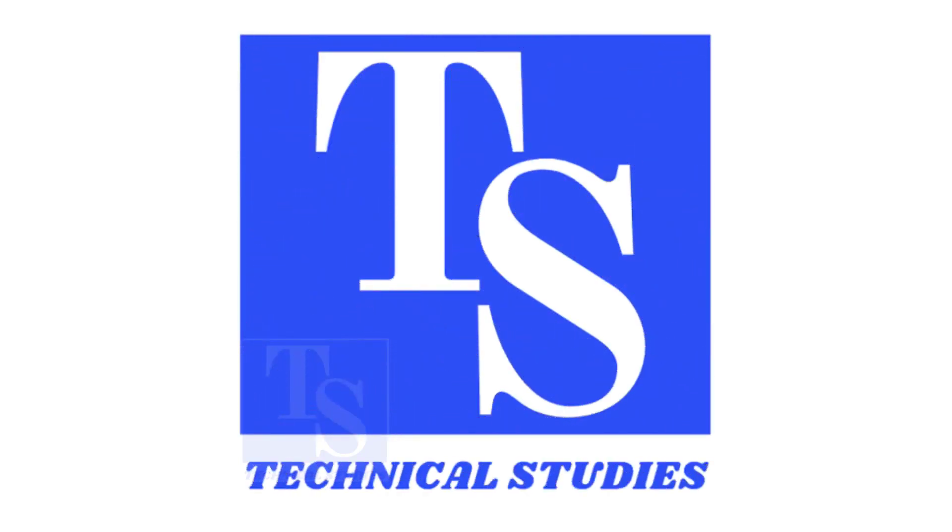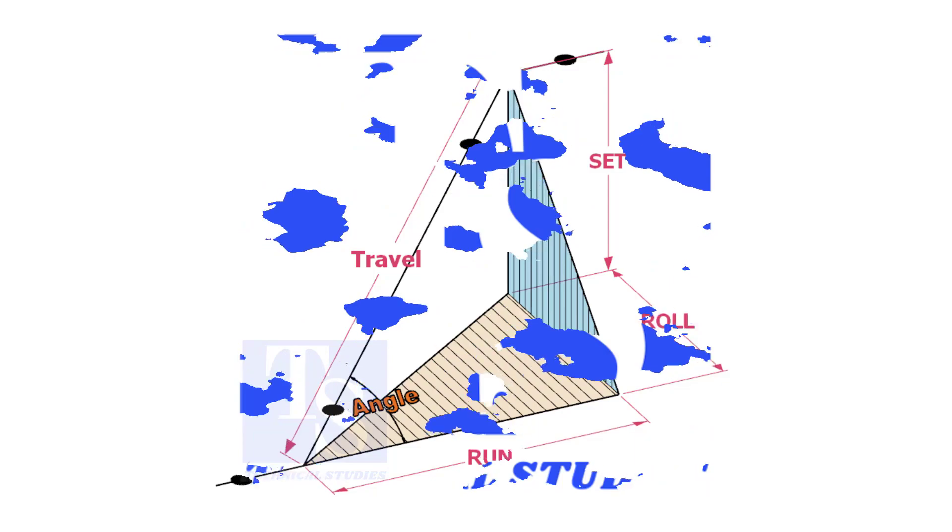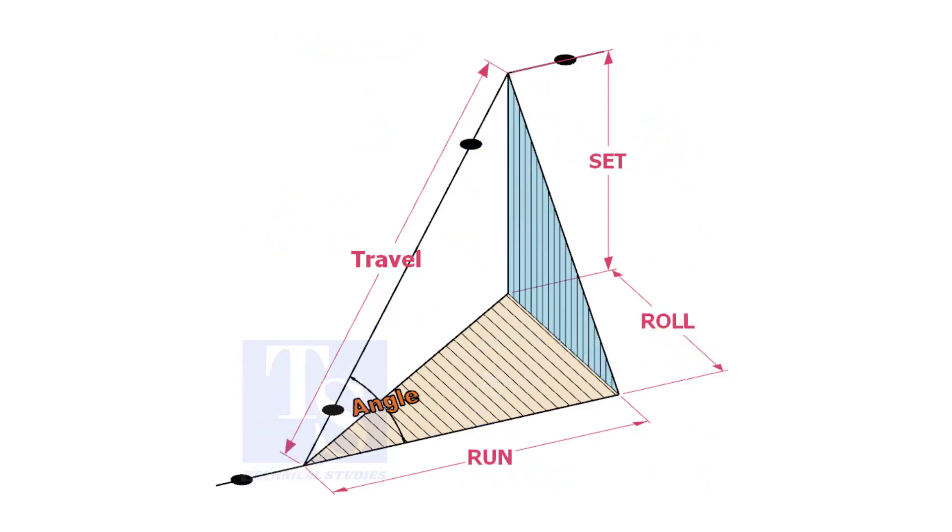Welcome to Technical Studies. In a piping drawing of a double rolled offset, usually the dimensions of the run, set, and roll are given.